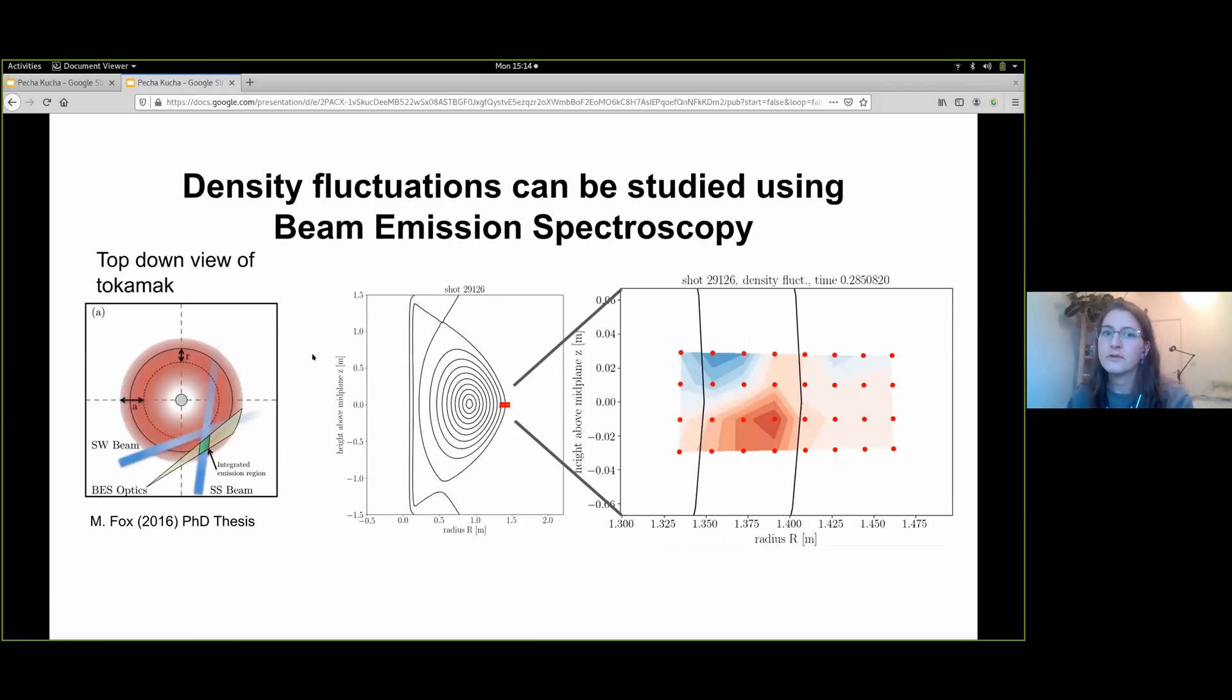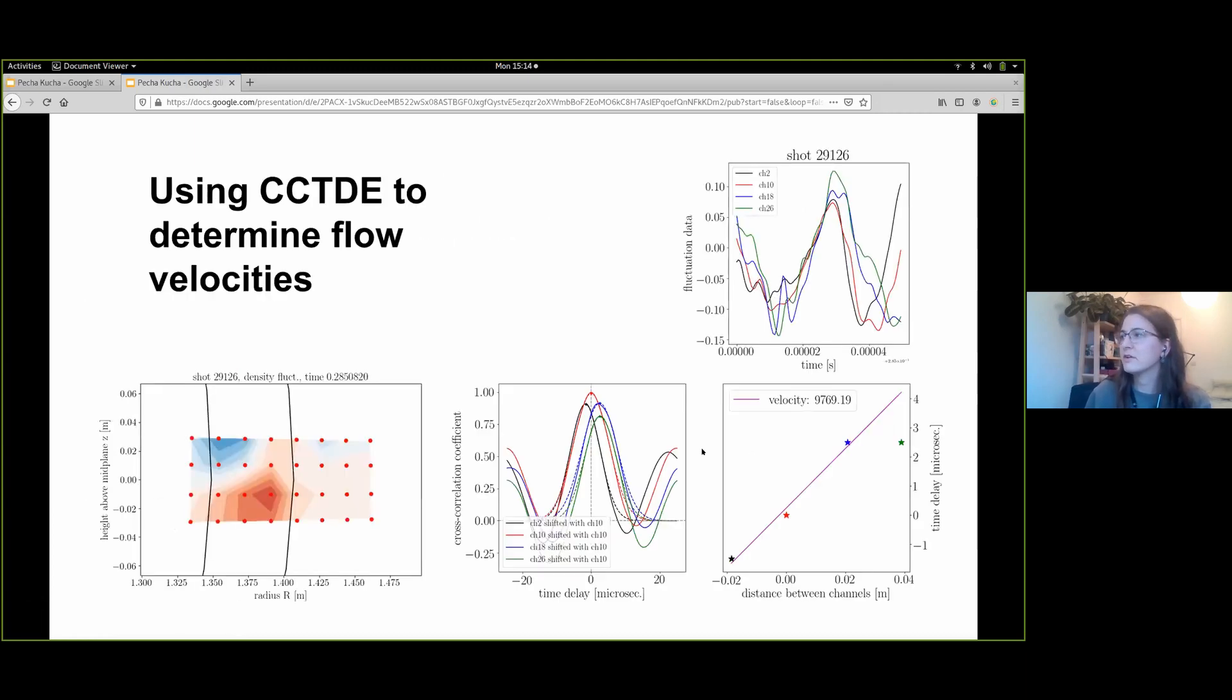She works with data from beam emission spectroscopy, which utilizes the emission from excited neutral beam particles to localize density fluctuations to a 2D array with high time resolution. The array can be set at a V radius such that it will cross the separatrix.